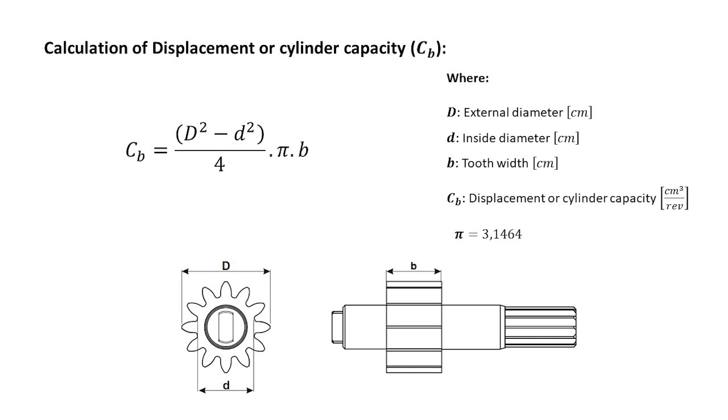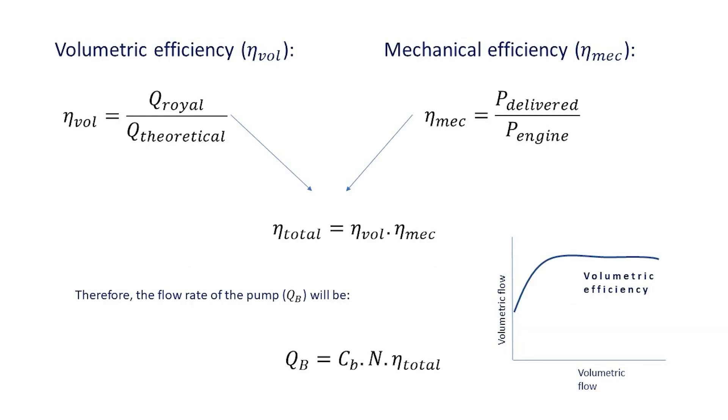In some cases, the displacement is referred to as the supply flow rate. Just as there is volumetric efficiency, there is also mechanical efficiency, which is equal to the hydraulic power delivered by the pump to the system divided by the power supplied by the motor. From these we can obtain the total efficiency and therefore the flow rate of the pump.